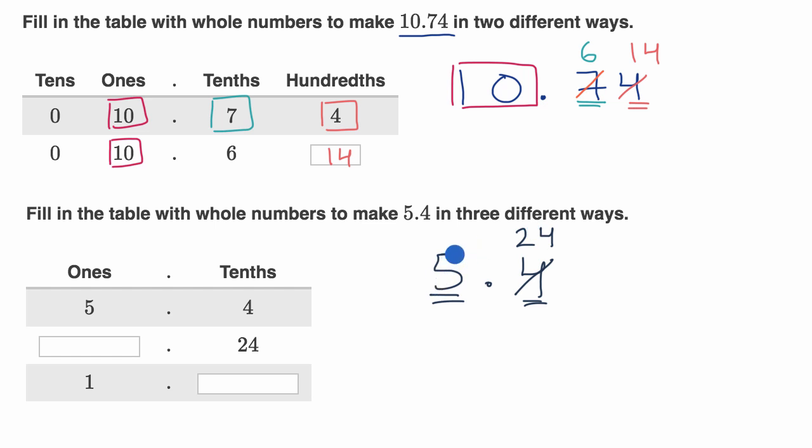20 tenths is the same thing as two ones. So they must have taken two ones away from here. So they took two ones away from here. So this would be three ones and now 24 tenths. So we could put a three right over there. And you can verify that. 24 tenths is the same thing as two wholes and, or two ones and four tenths or 2.4. 2.4 plus three is going to be equal to 5.4.